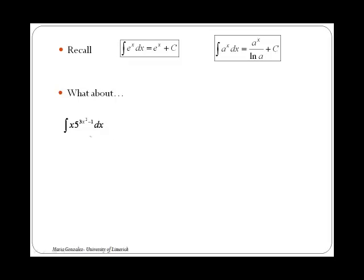In this case we have an exponential, 5 to the 3x squared minus 1, and as the base of the exponential is 5, this could look similar to the integral of a to the x, where a is 5. The difference is that x has been replaced by 3x squared minus 1.